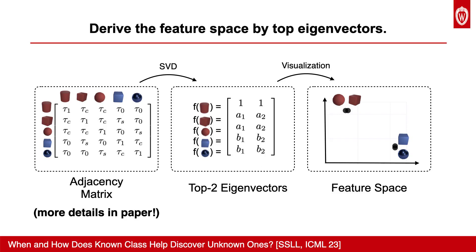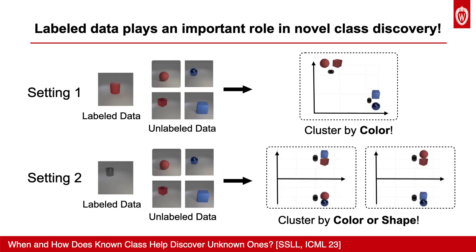We include more calculation details in the paper. Then we can see that in setting 1, unlabeled samples will be clustered by colors, while in setting 2, they can be clustered by either color or shape. This suggests that labeled data plays an important role in novel class discovery.